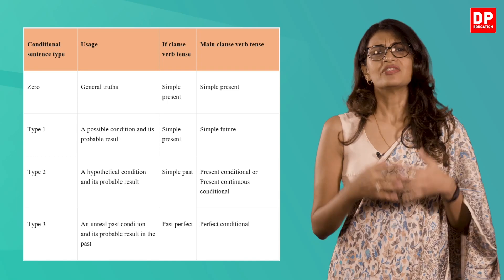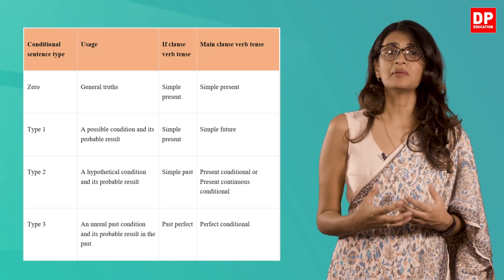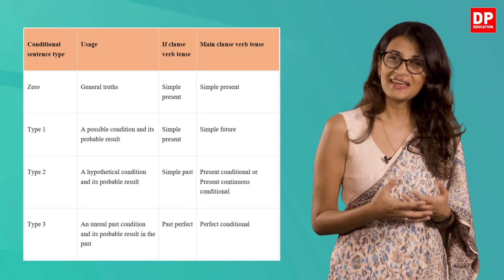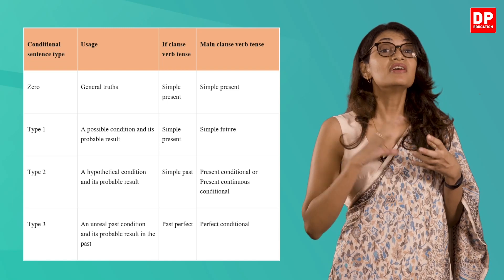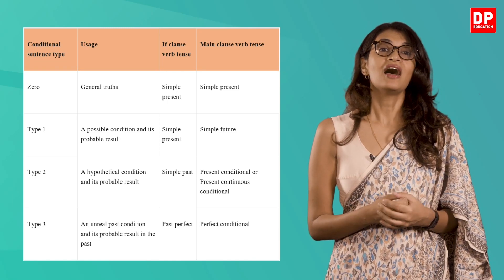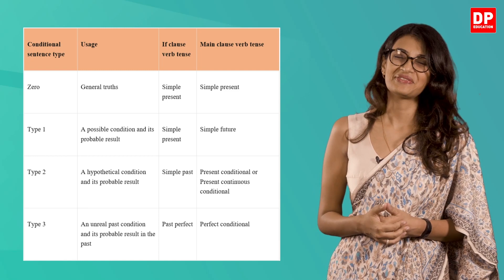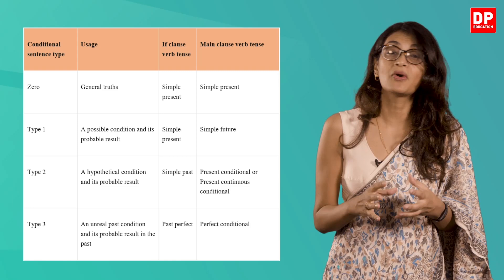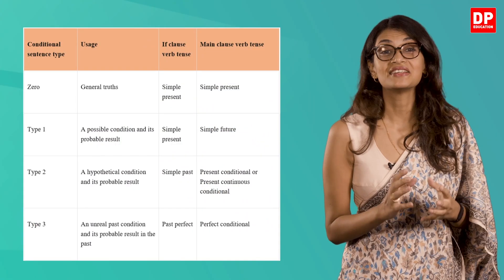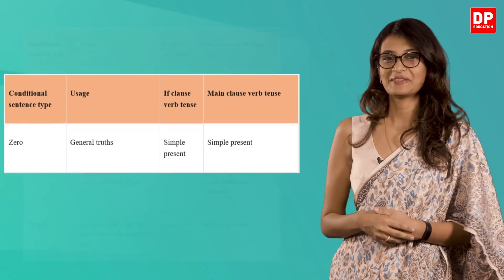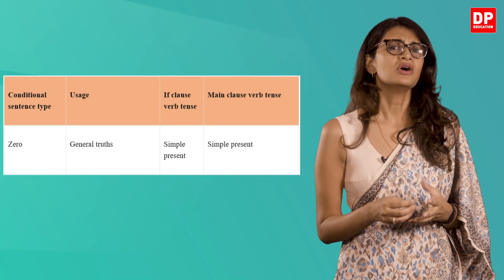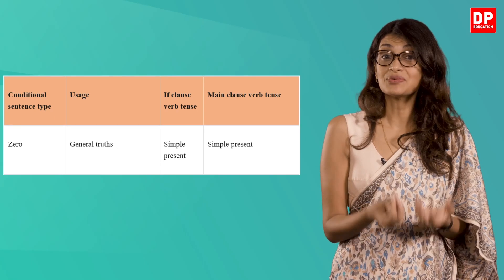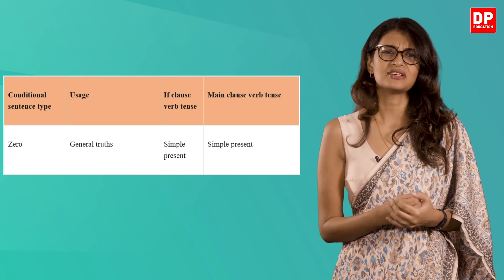There are four main ways of constructing conditional sentences in English. In all cases, these sentences are made up of an if clause and a main clause. In many negative conditional sentences, there is an equivalent sentence construction using 'unless' instead of 'if'. Let's look at each aspect of this table and examine each point at length. The first conditional is the zero conditional. The zero conditional is used for when the time being referred to is now or always, and the situation is real and possible.